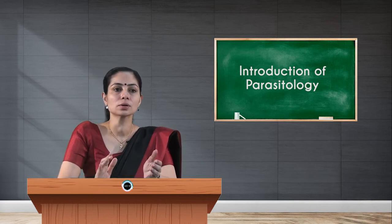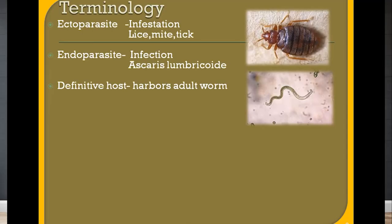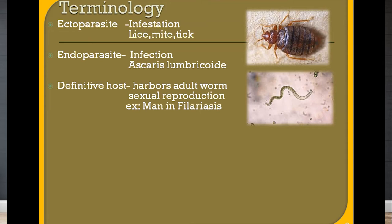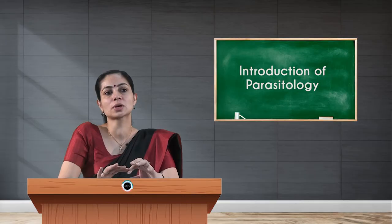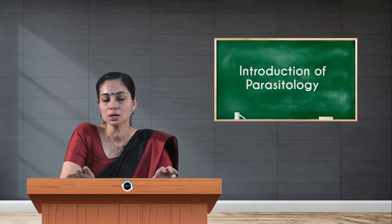According to habitat, we classify the host as a definitive host or an intermediate host. In the case of a definitive host, the host harbors the adult worm and sexual reproduction of the parasite happens inside it. For example, in filariasis caused by Wuchereria bancrofti, man acts as the definitive host — the adult worm lives in the human body and sexual reproduction also takes place there.